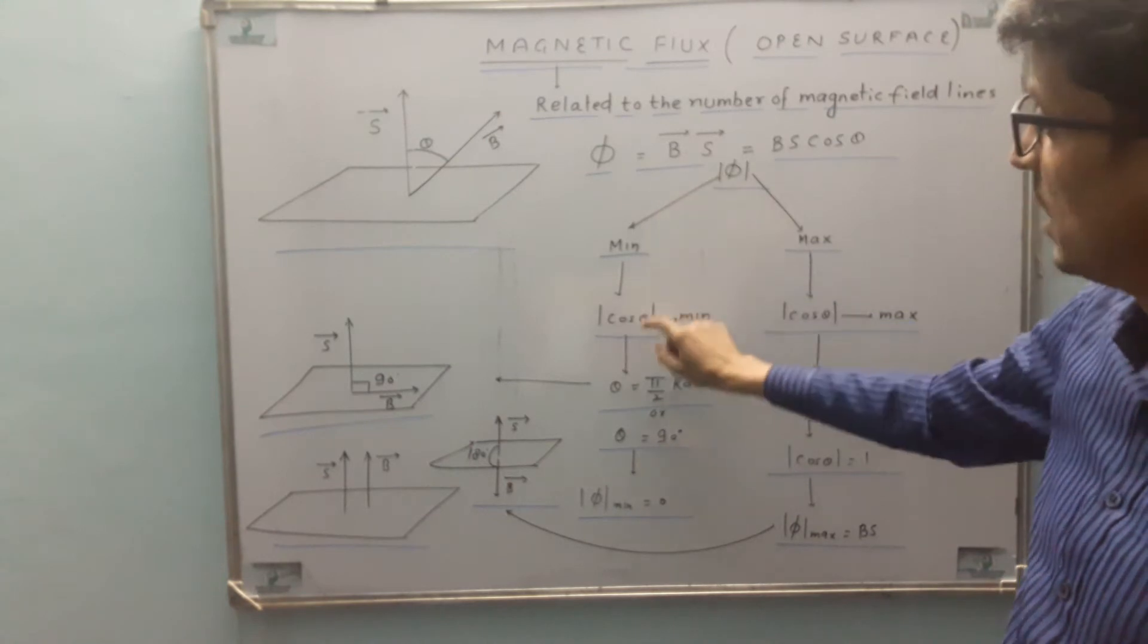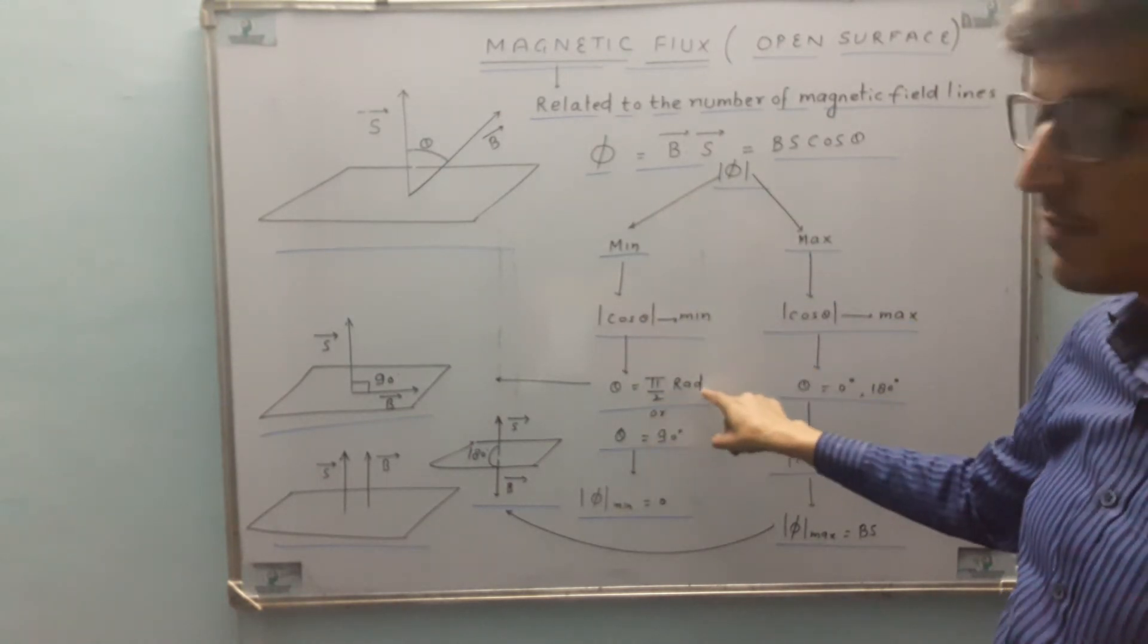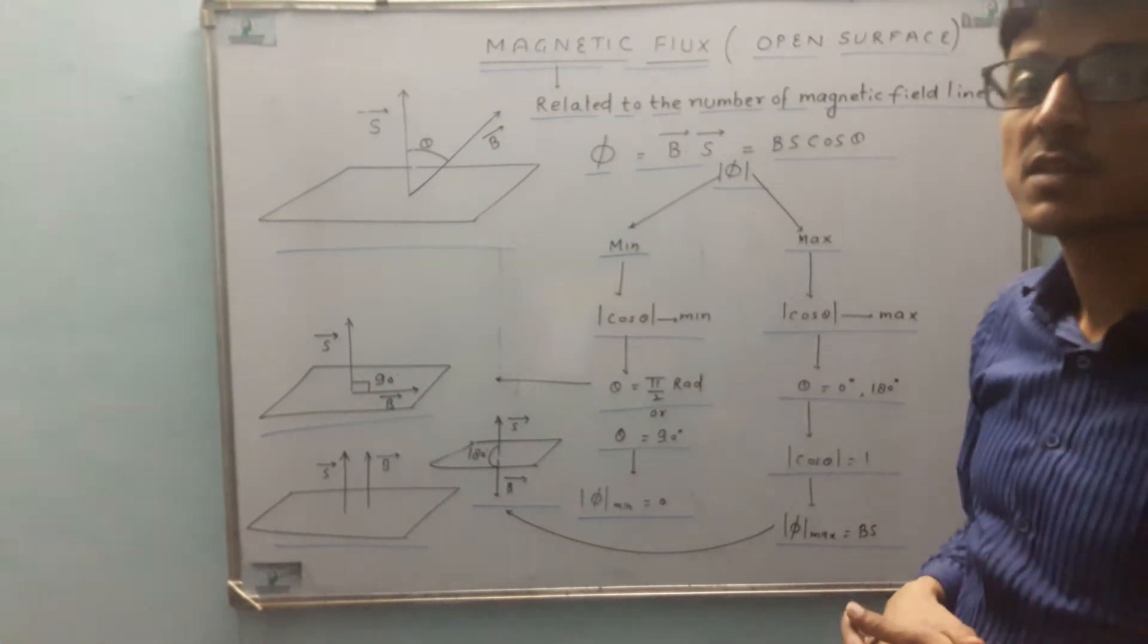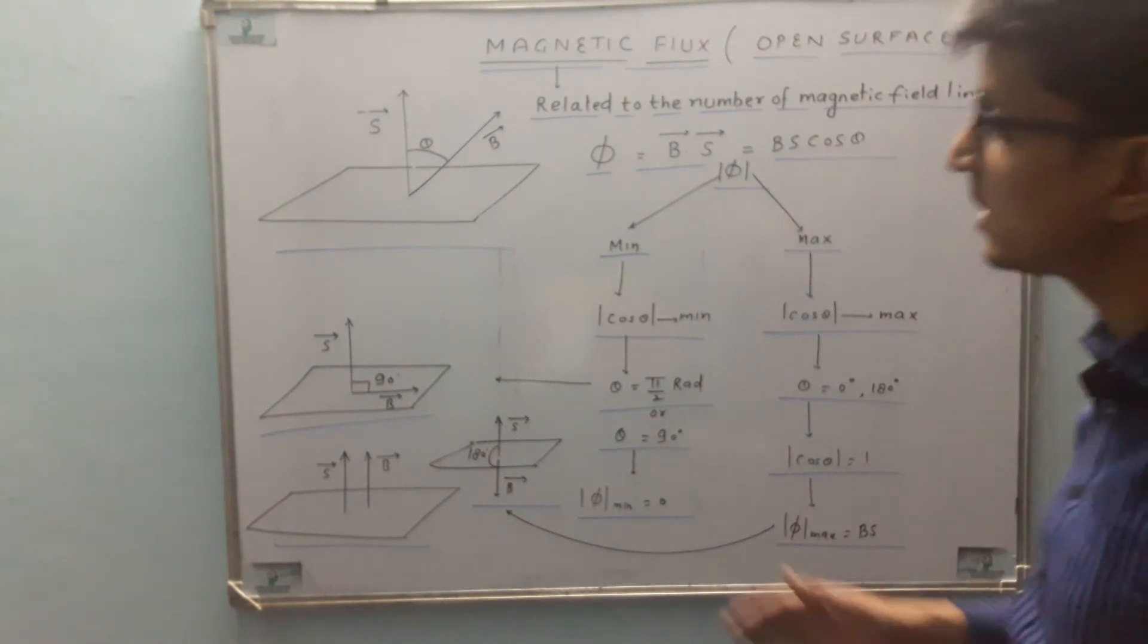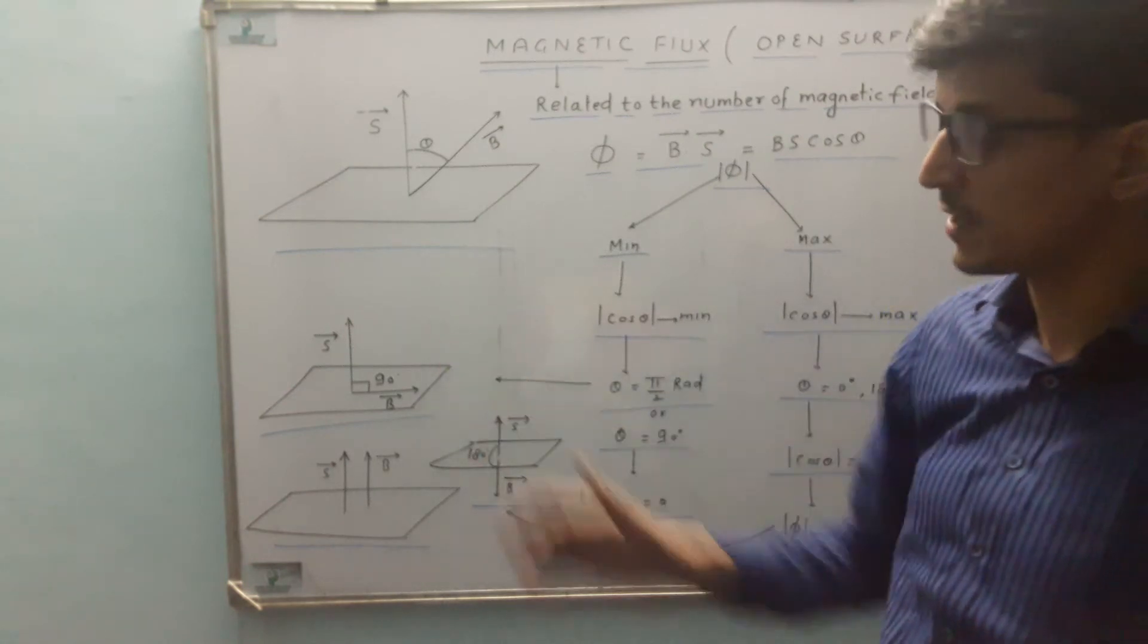It is minimum when mod cos theta is minimum. And this is minimum when theta is equal to pi by 2 radians. The flux has minimum magnitude when theta is 90 degrees, that is, magnetic field and area vector are perpendicular to each other as you can see over here.